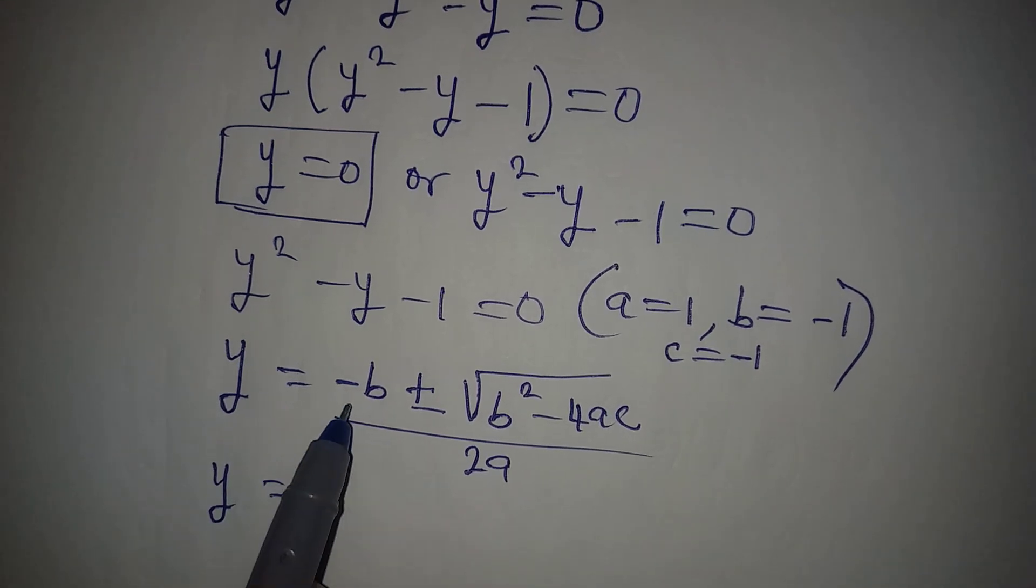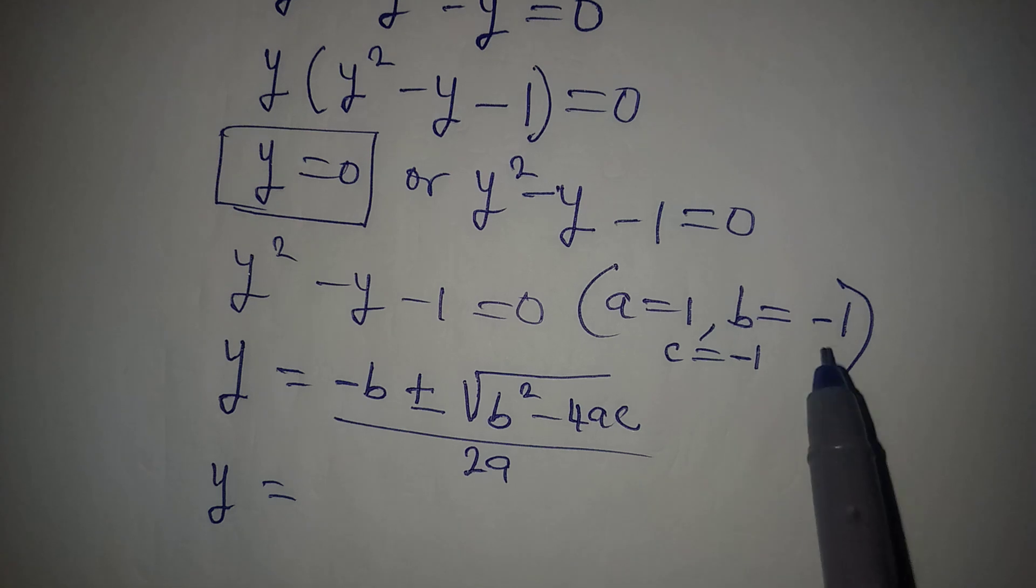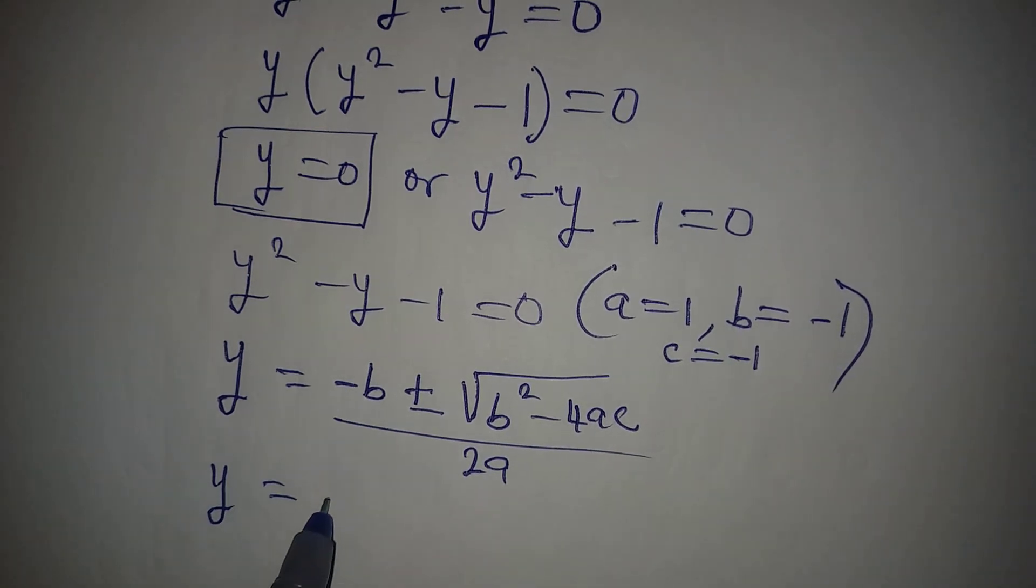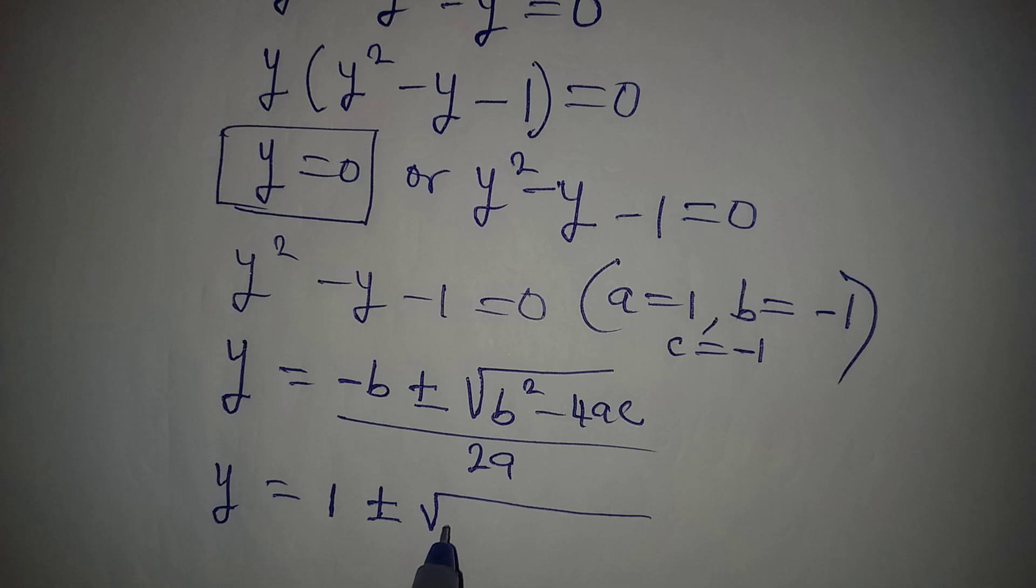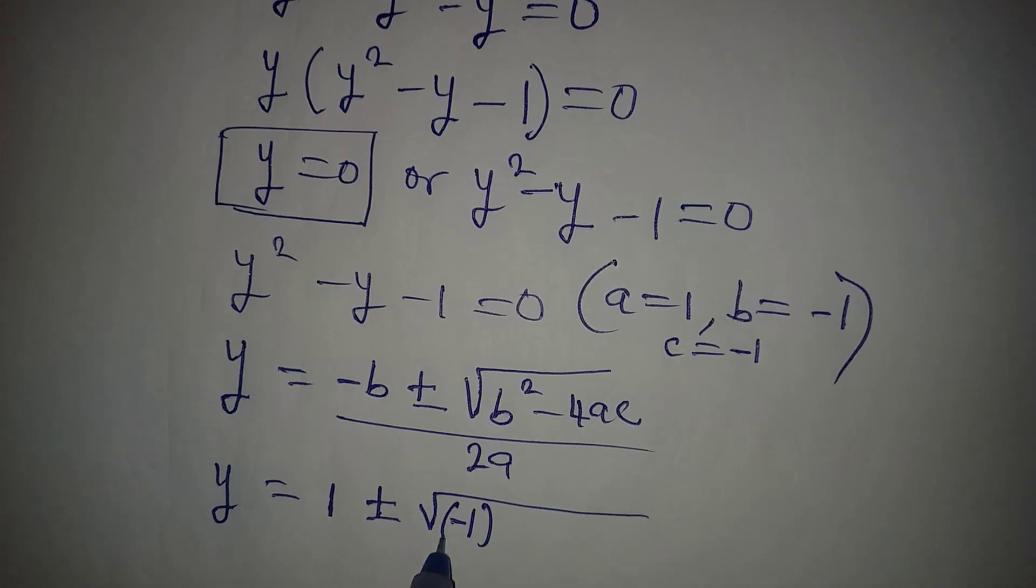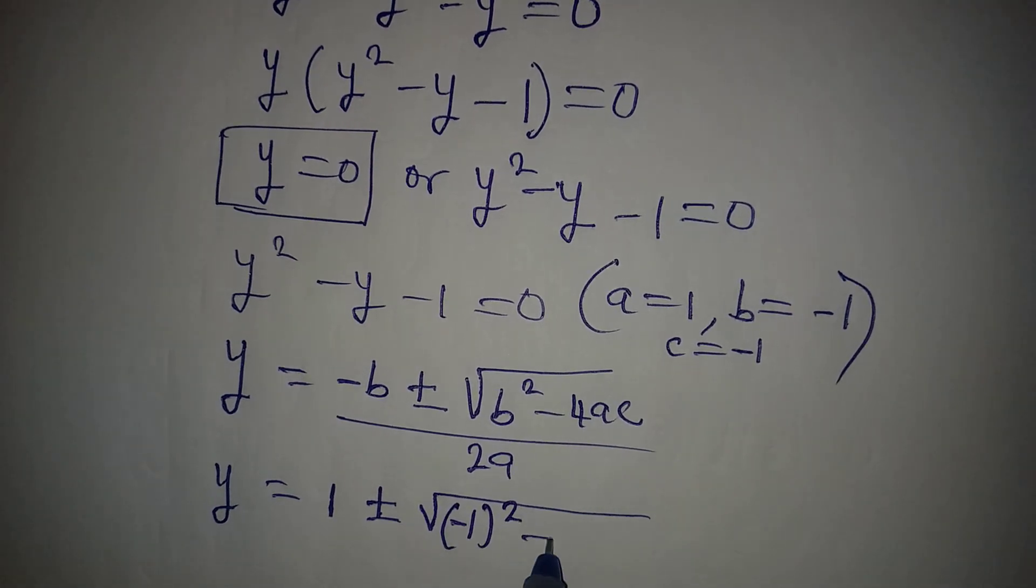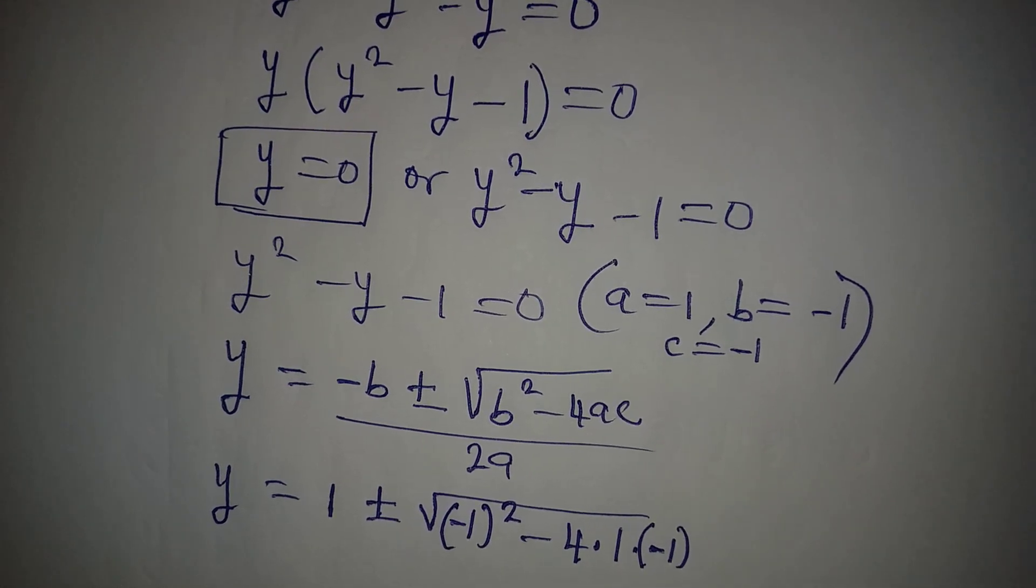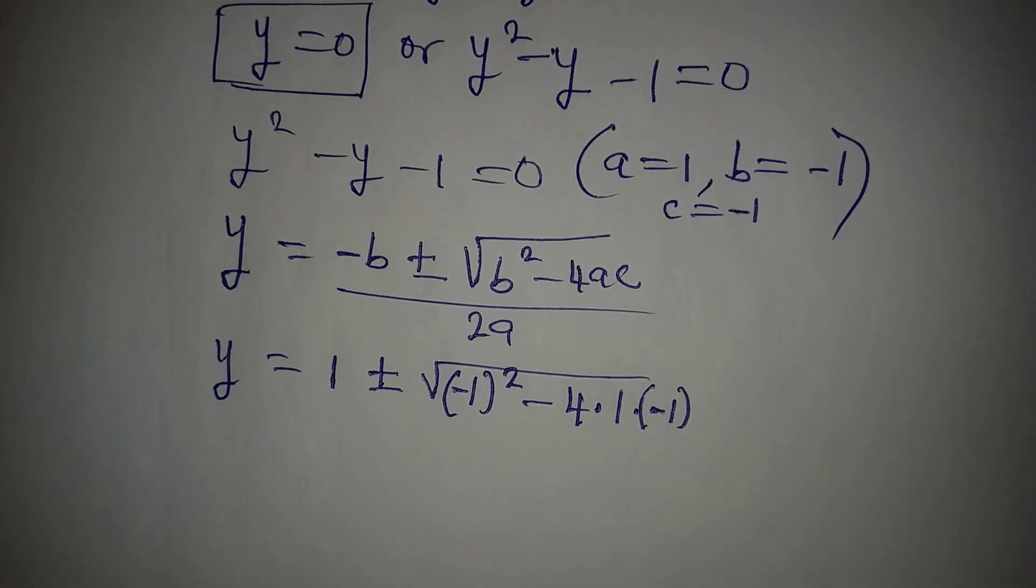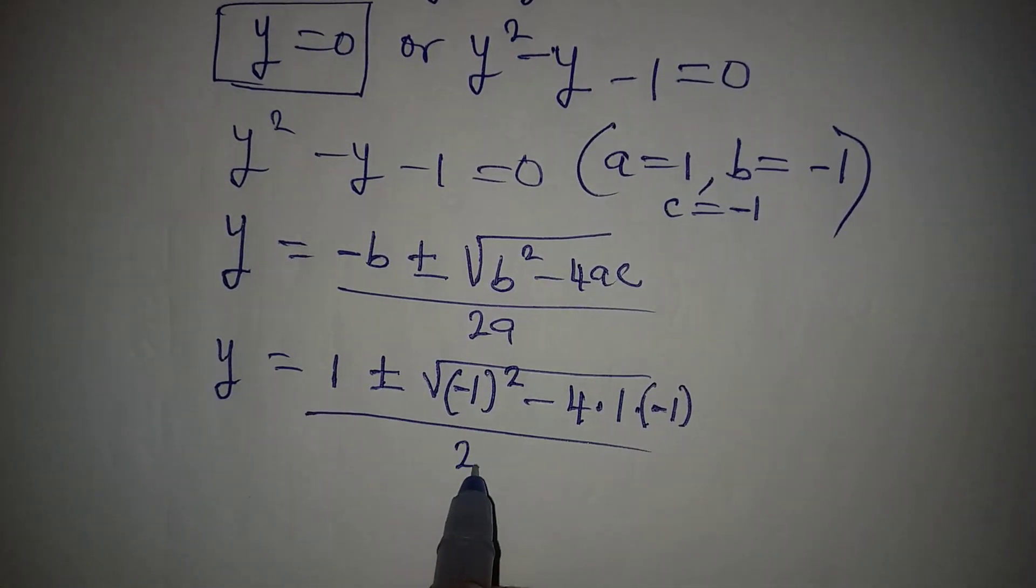Now y from here is b minus 1, right? So this negative will cancel, so we're going to have 1 which is plus 1, then plus or minus b squared. That will be minus 1 in brackets squared, then minus 4 times a is 1 times c which is minus 1 as well. Then this will be over 2 times 1.